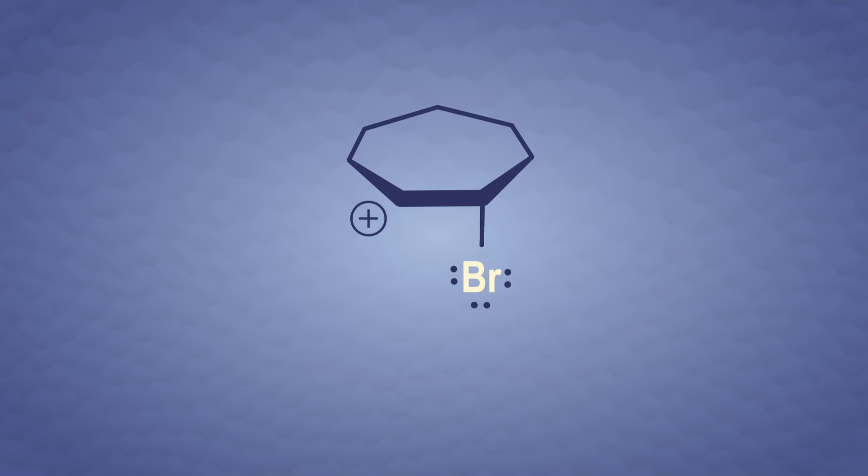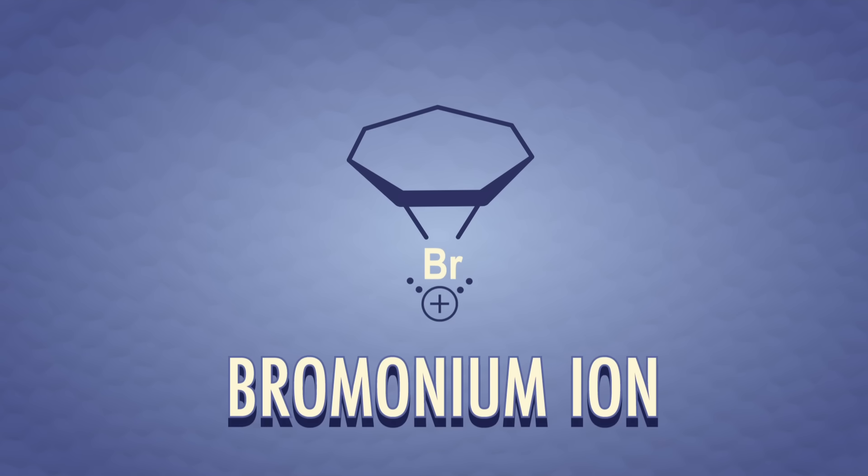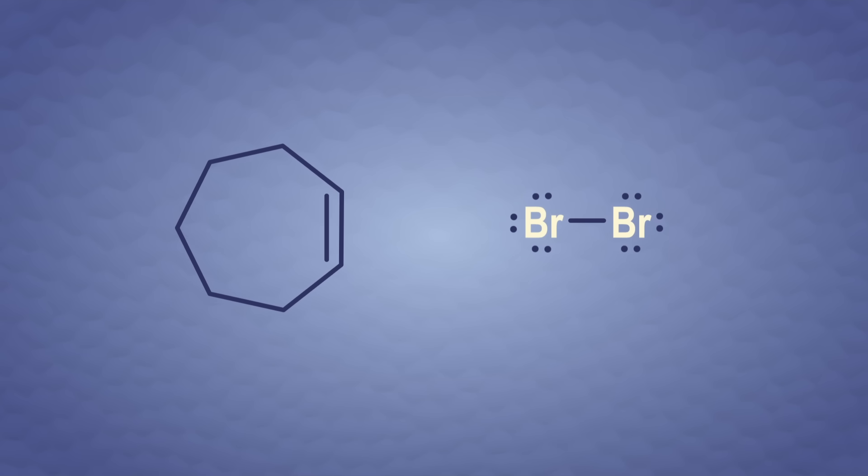We don't form a simple carbocation here. If we think about bromine donating a pair of its electrons to the nearby positive charge, we form a structure called a bromonium ion. This high-energy bridge helps stabilize the positive charge. To get straight to the bromonium ion, we need to adjust our arrow pushing for the first step. The alkene attacks, Br- is kicked off, and we also show a lone pair from the bromine we attacked reaching back to attack the alkene to form the bridge.